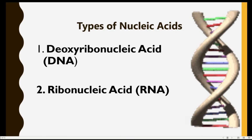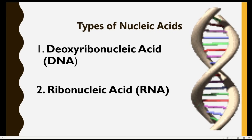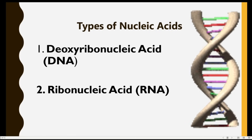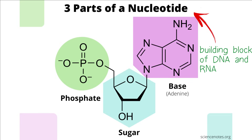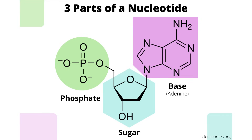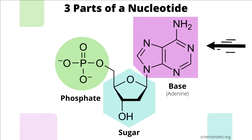Both types of nucleic acids have a building block called nucleotides. A nucleotide is an organic molecule that is the building block of DNA and RNA. A nucleotide has three parts: it has a phosphate group, a 5-carbon sugar, and a nitrogenous base. The two types of nucleic acids differ in their sugar and slightly in their nitrogenous base.